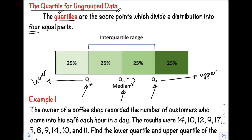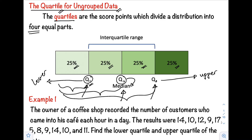These quartiles divide the distribution into four equal parts, and per division we have twenty-five percent of our distribution. That means twenty-five percent of our data falls below the first quartile, and fifty percent falls below the second quartile. The interquartile range is the difference between the third quartile and the first quartile.